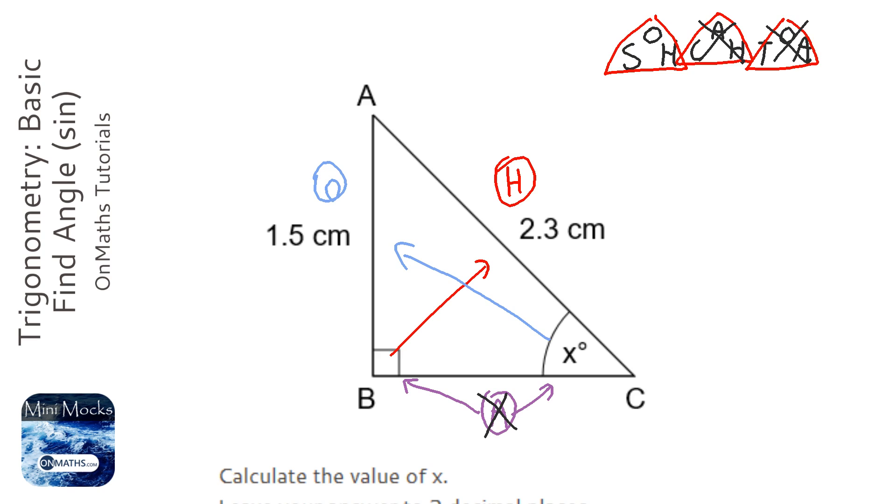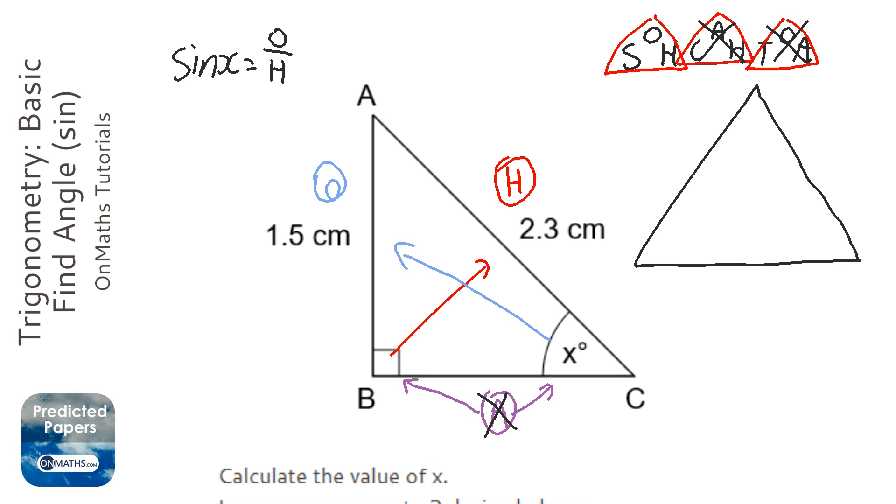OK, now, what we can do is write out sin x equals opposite over hypotenuse and solve it that way. But I'm going to do a different method. It's an easier method. But if you know that way, stick with it.